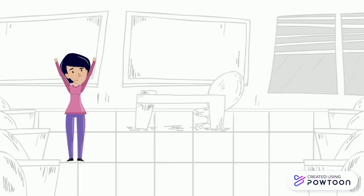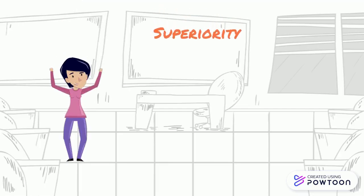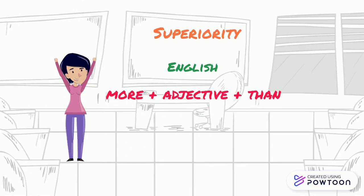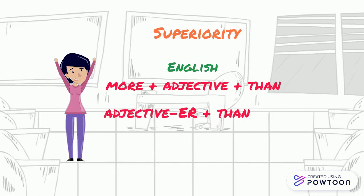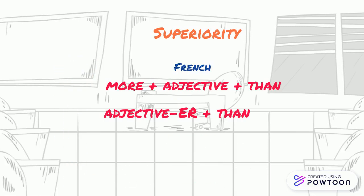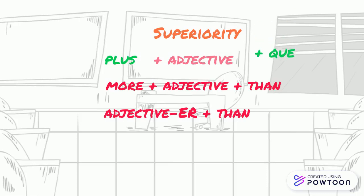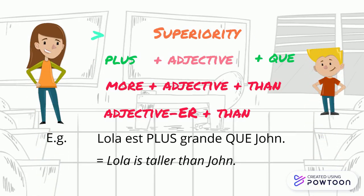And finally, you have the comparative of superiority. In French, it is actually easier than in English. In English, the structure is 'more + adjective + than', but for short adjectives the adjective itself changes and the suffix -er is added — for instance, 'hard, harder', but 'difficult, more difficult'. In French, as I've said, it's simpler. The structure is plus + adjective + que, and this is true for all adjectives. For instance, 'Lola est plus grande que Jeanne' — Lola is taller than Jeanne.